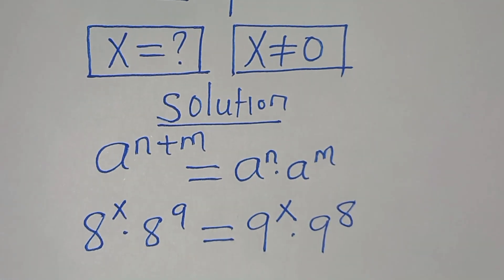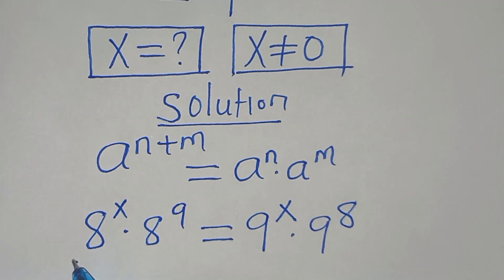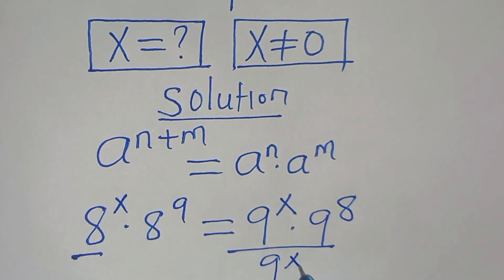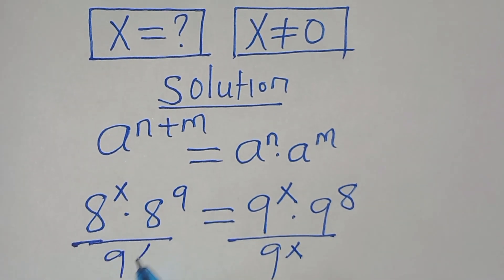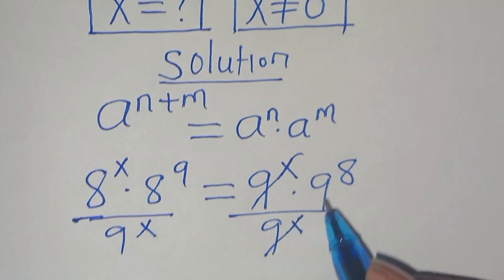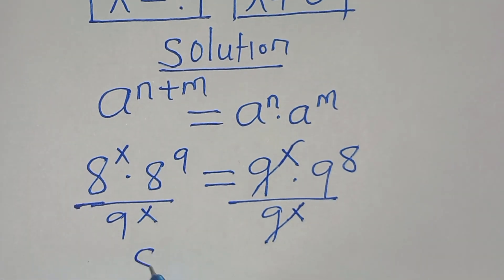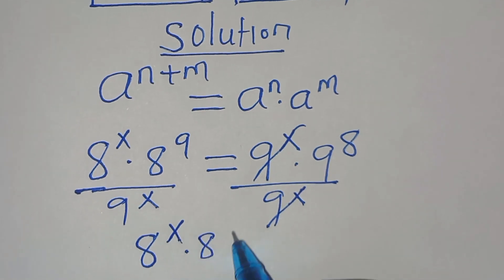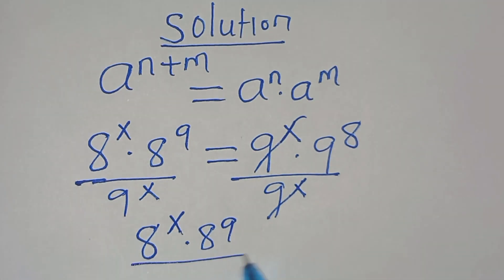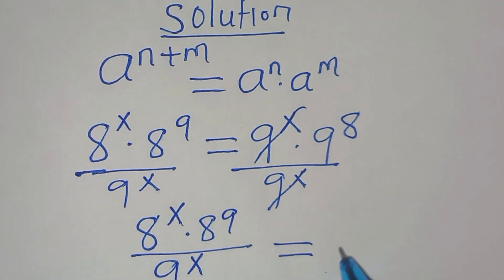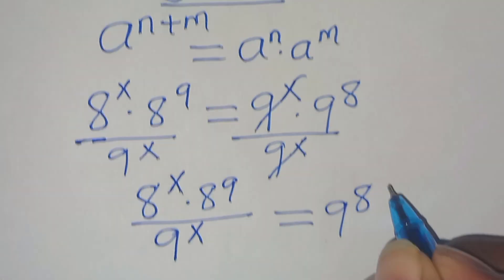The next step is to divide both sides by 9 to the power of x. Simplifying 9 to the power of x, we have 8 to the power of x multiplied by 8 to the power of 9, divided by 9 to the power of x. This is equal to 9 to the power of 8.